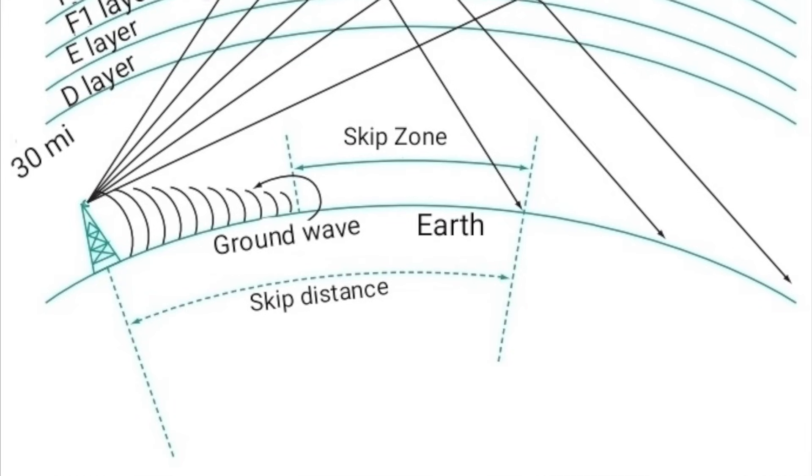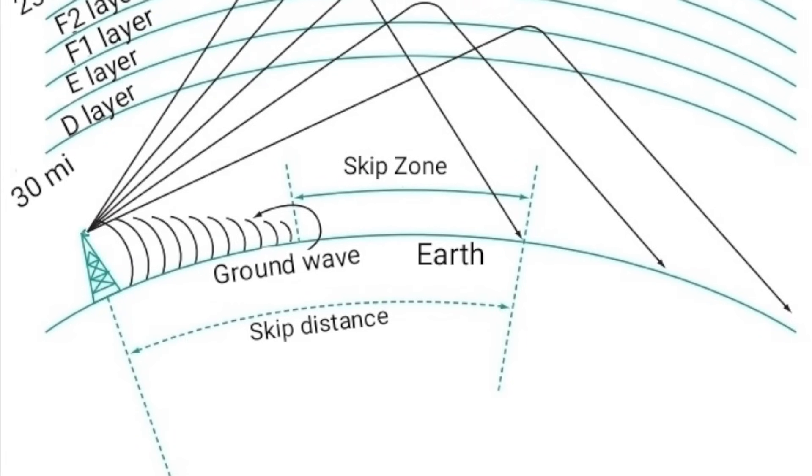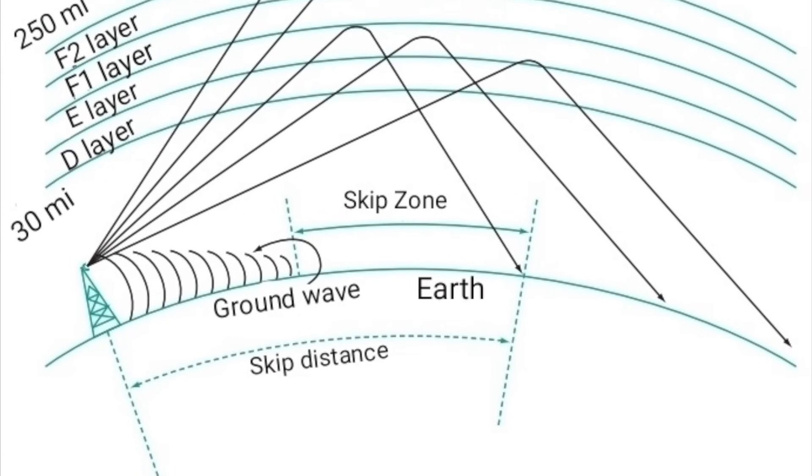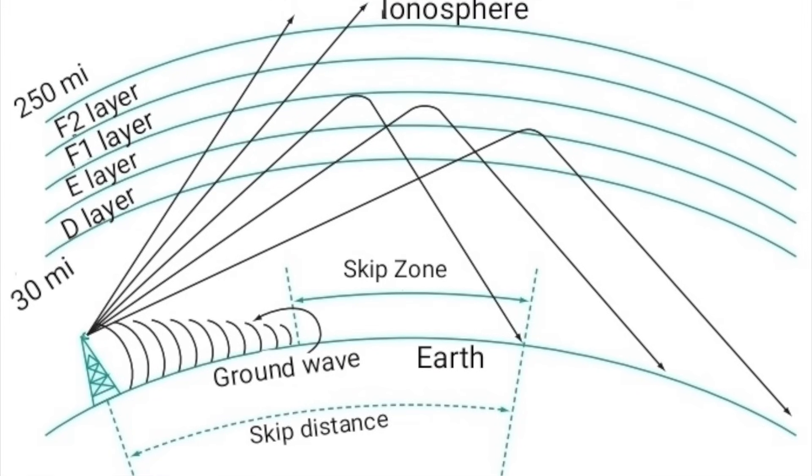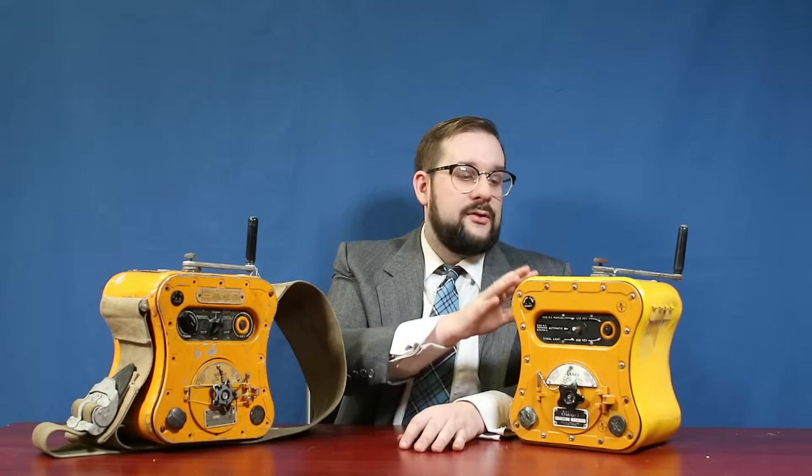Secondly, lower frequency transmissions like at 500 kilohertz tend to propagate as ground waves and thus have a limited range. Typically 500 kilometers in ideal conditions such as out in the open ocean and as short as 16 kilometers over wet ground. Higher frequency or shortwave transmissions on the other hand tend to propagate as skywaves bouncing off the ionosphere and thus can achieve much longer ranges on the order of thousands of kilometers.